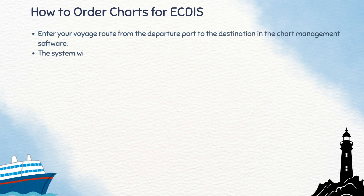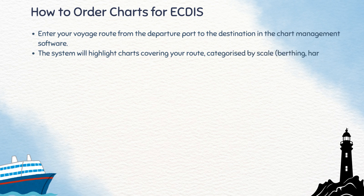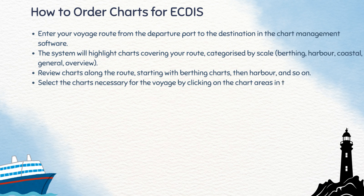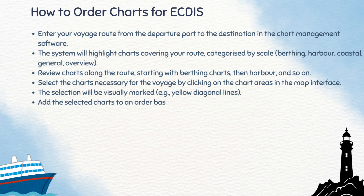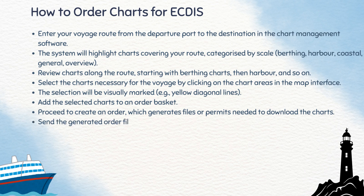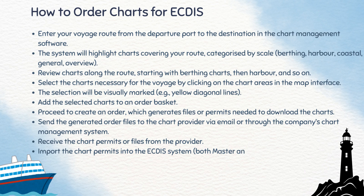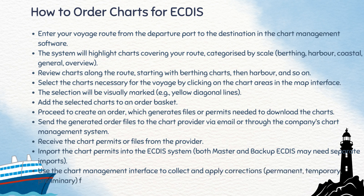How to order charts for ECDIS — the process is straightforward. Enter your voyage route into the chart management software. The system highlights all the charts covering your route, categorized by scale: from berthing, to harbor, coastal, general, and overview. Select the required charts, add them to your basket, and generate an order file. Send this file to the chart provider by email or through the company's system. In return, you receive permits, which are then imported into the ECDIS. Finally, apply corrections to ensure your charts are fully up to date.